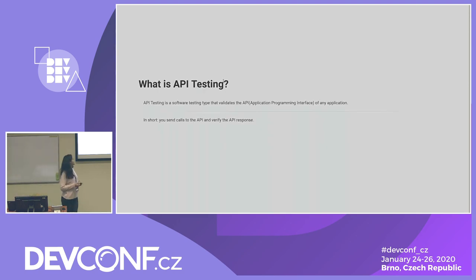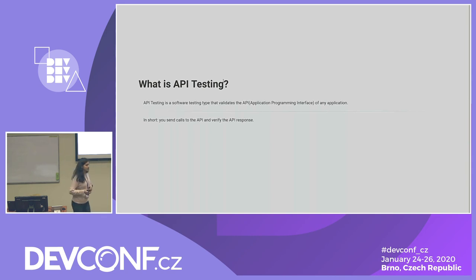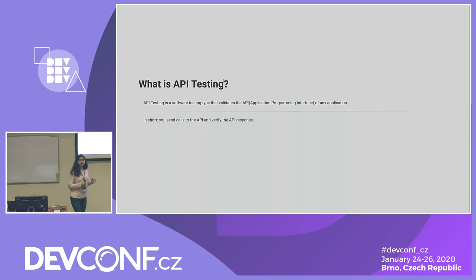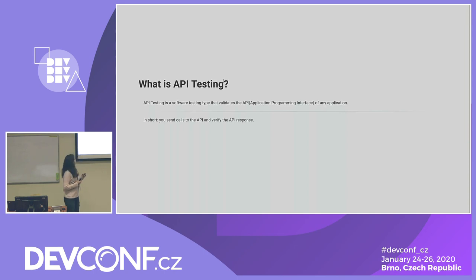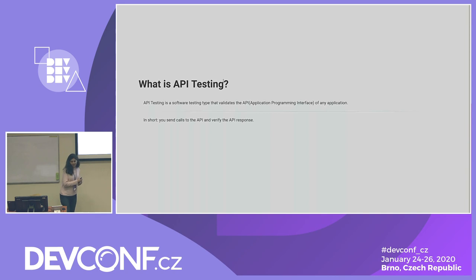What is API testing? API testing is a type of software testing that validates the application programming interface of any application. In short, you send calls to the API and verify the response. You need two things for this: a tool to drive the API, and test code to test the API.